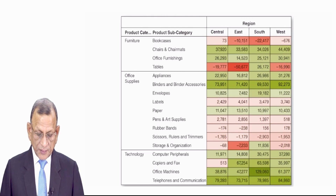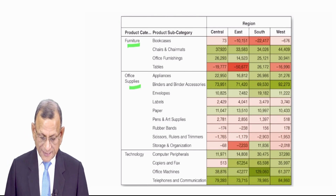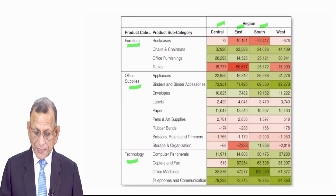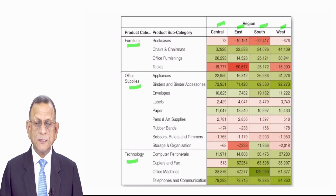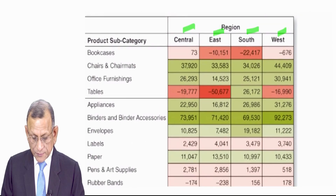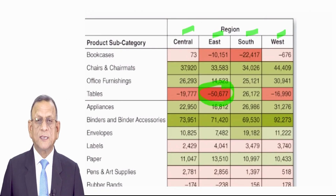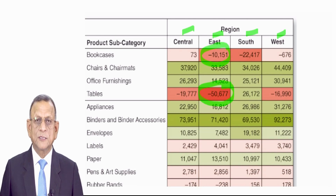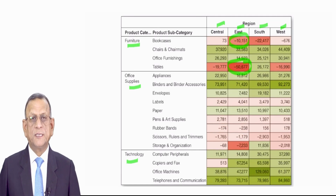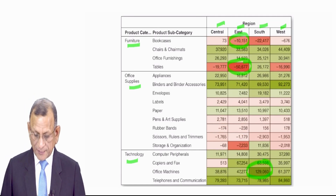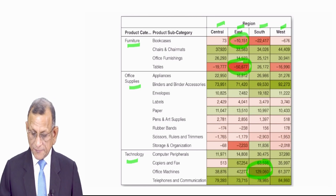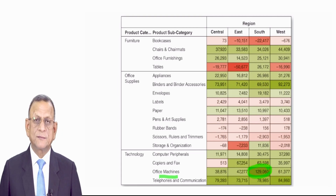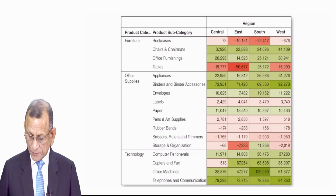This is another example of data visualization — a table showing the sale of furniture, office supplies, and technology across central, east, south, and west regions, showing increases and decreases. To identify one simple fact: if the value is minus 50,000 or more, the color of the cell is darker compared to minus 10,000. With the help of colors, we can show a lot of things. For example, office machines in the southern area have gained — a darker cell means a significant positive change has happened in that area.